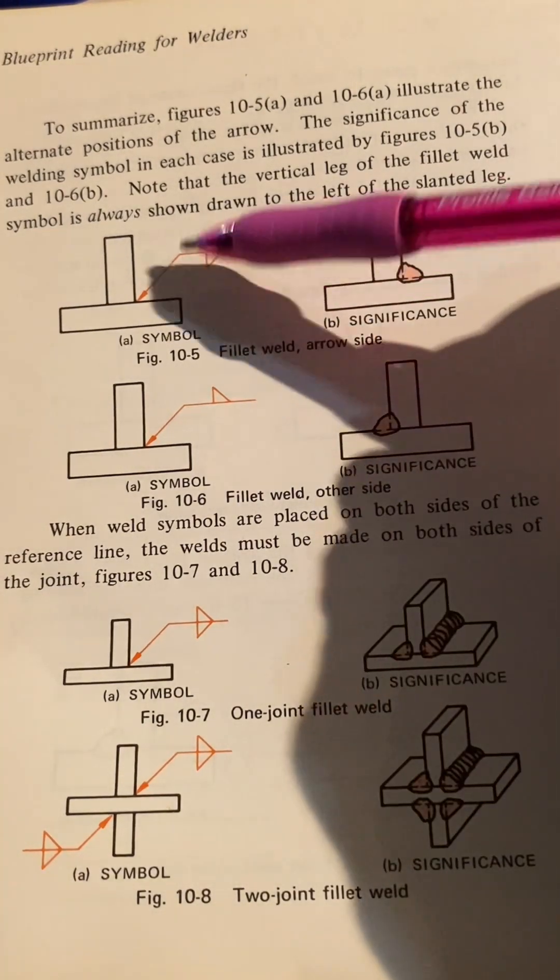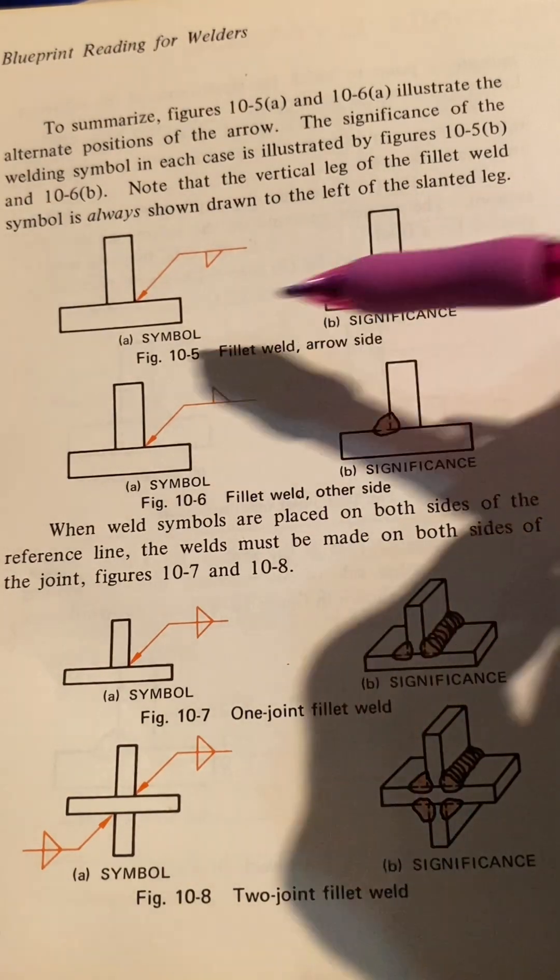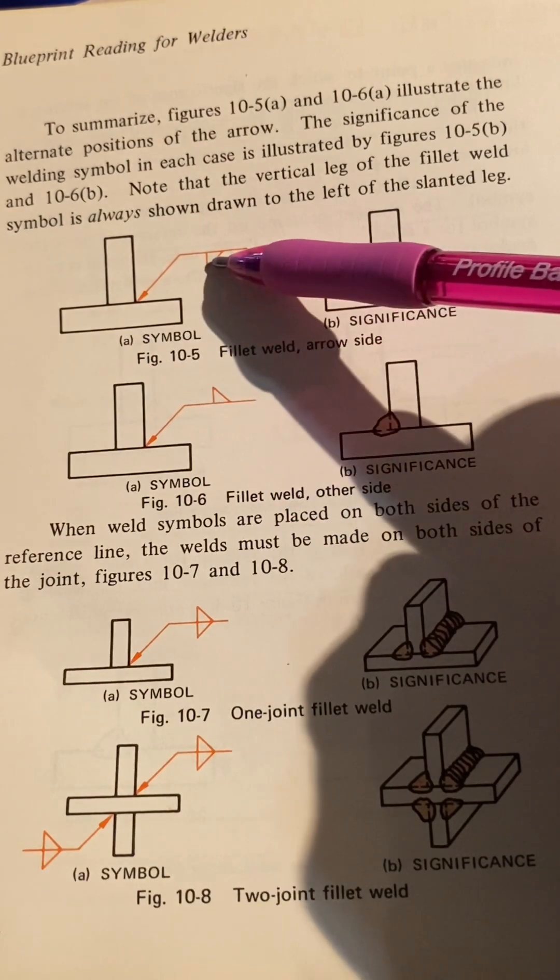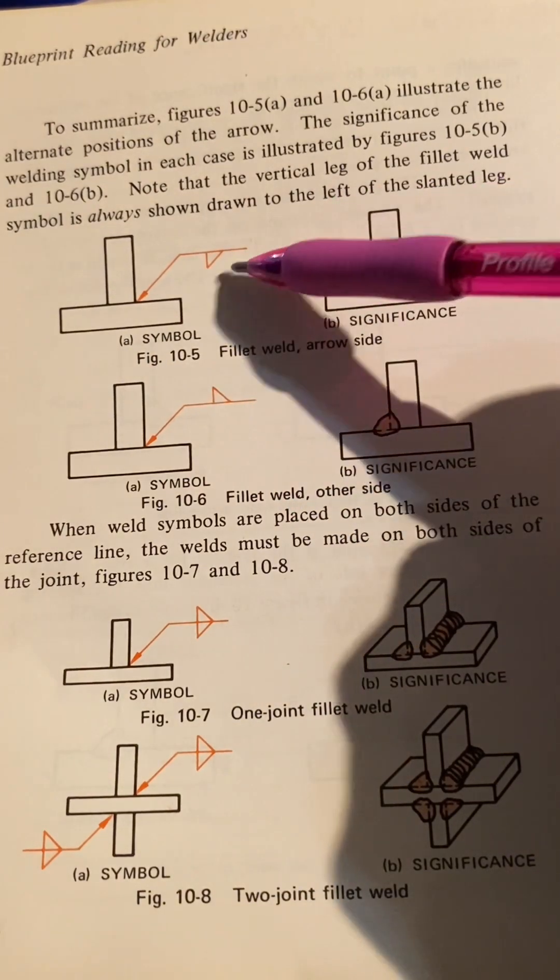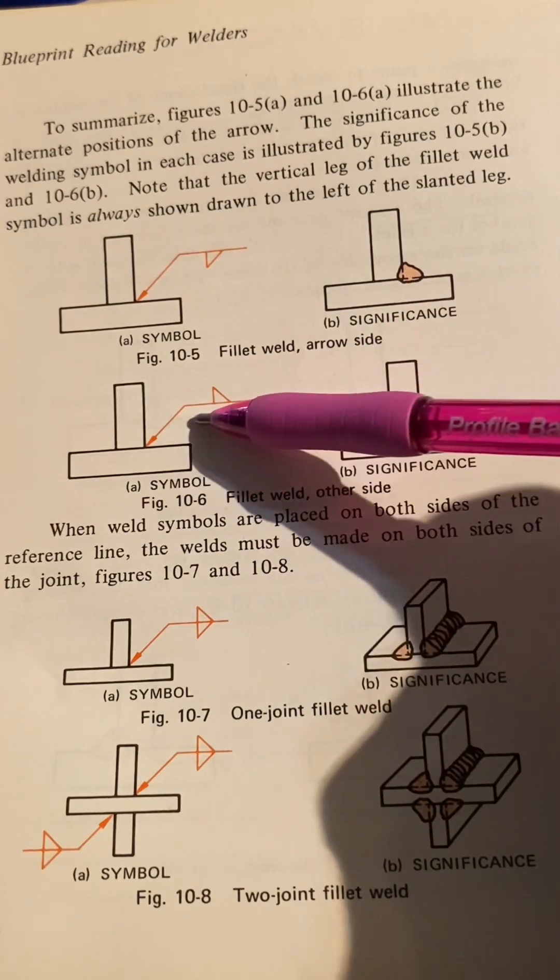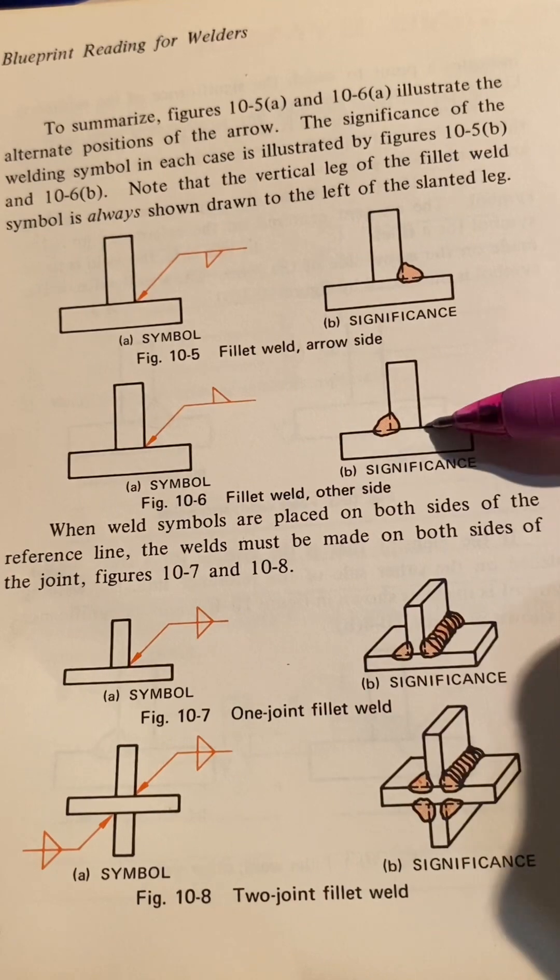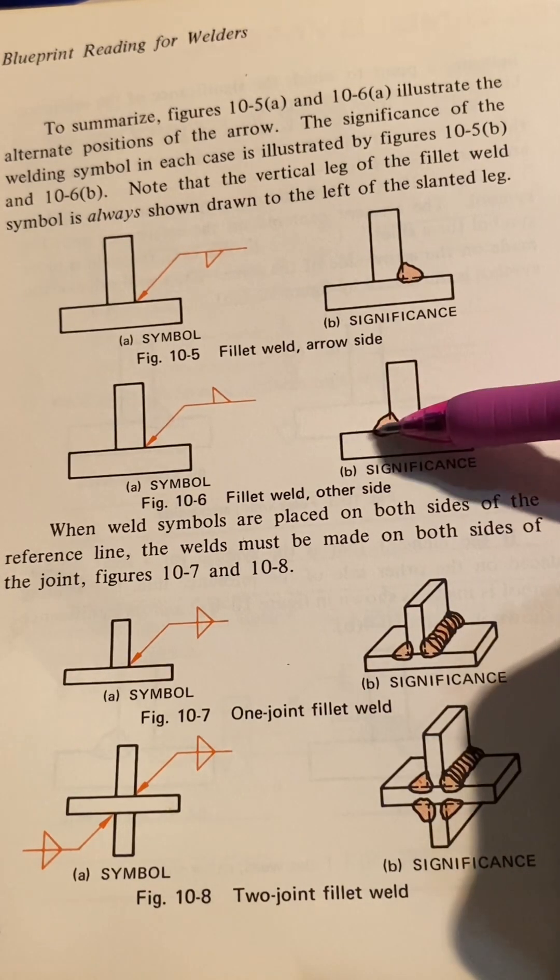That's what this symbol looks like here and the significance of the appearance. You see, the arrow is on this side, and the weld is on the arrow side at the bottom, so the weld is on this side. And now the arrow is here, and the weld is on the other side. The arrow's pointing here, it's going to go to this side, and that's how that looks.